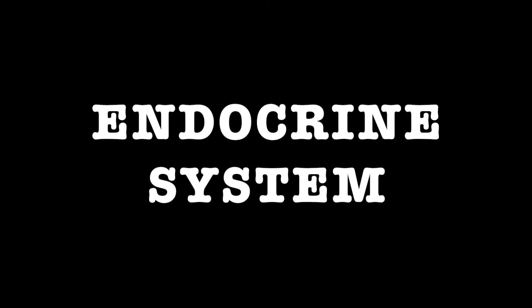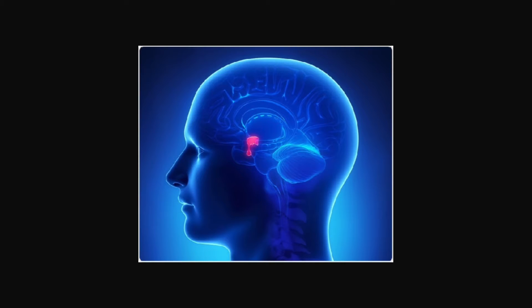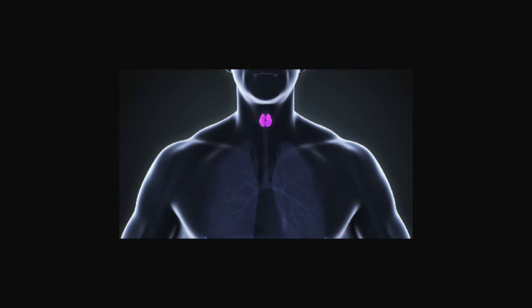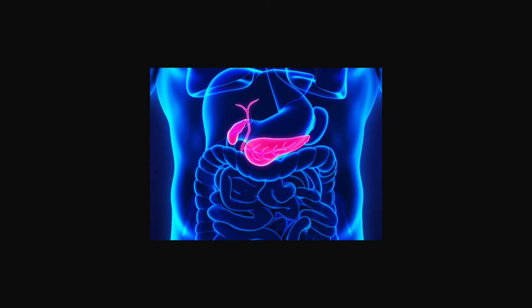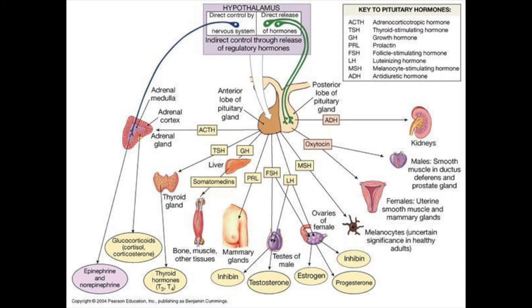Endocrine system: composed of endocrine glands which secrete hormones into interstitial fluid that then diffuse into the blood. Examples include the pituitary, thyroid, parathyroid, and adrenal glands, as well as the pancreas, ovaries, kidneys, stomach, liver, small intestine, skin, heart, adipose tissue, and placenta.